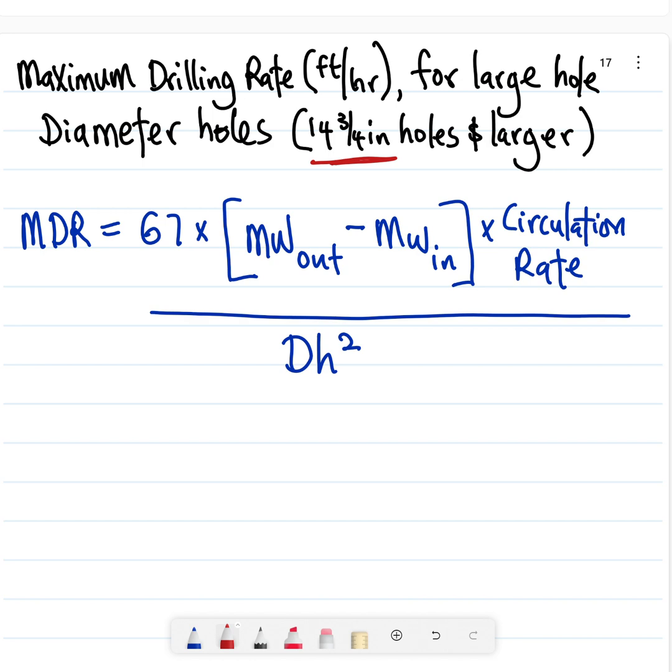The quick equation for doing that calculation is your maximum drilling rate is going to be 67, that's the constant, times mud weight out minus mud weight in, times circulation rate, all over the hole diameter squared. Your mud weight out and mud weight in have to be in pounds per gallon. Your circulation rate has to be in gallons per minute, and the diameter of the hole has to be in inches.